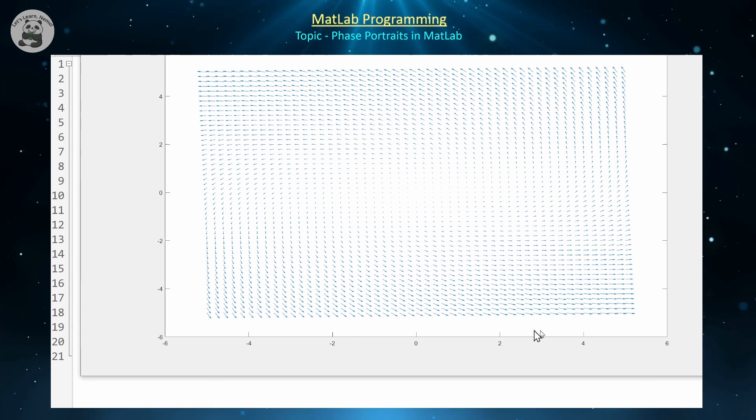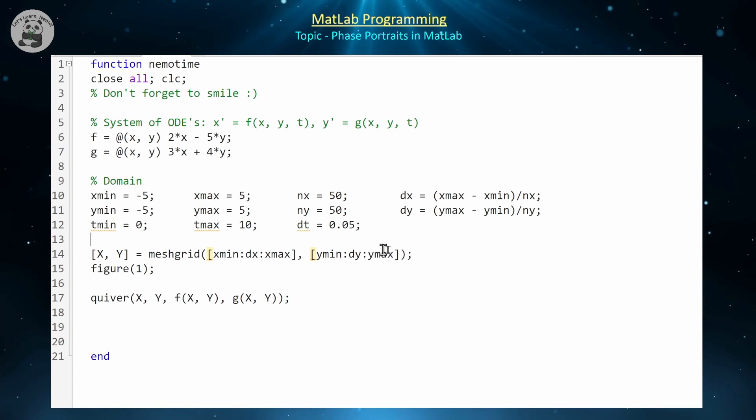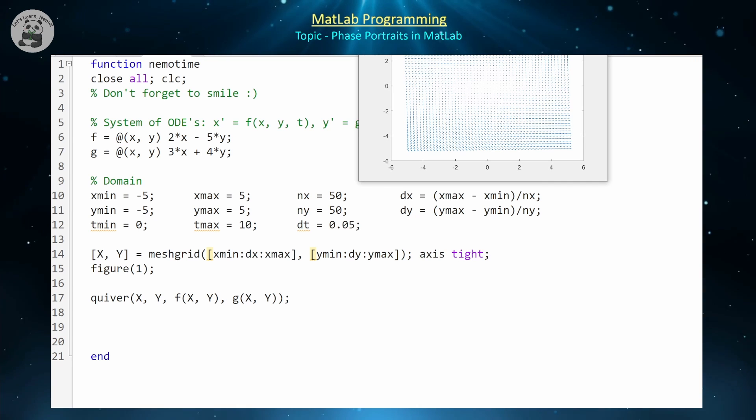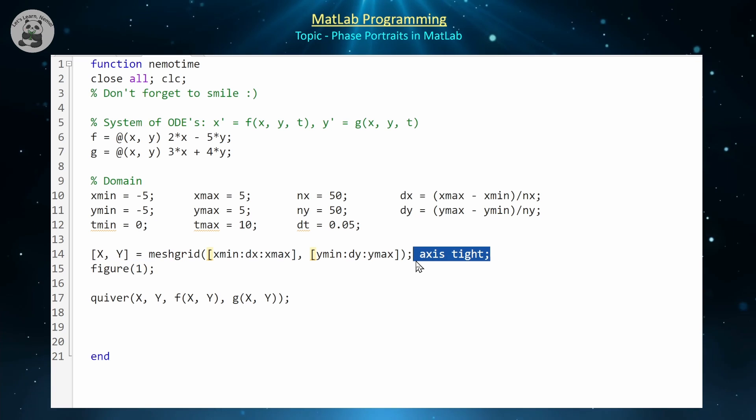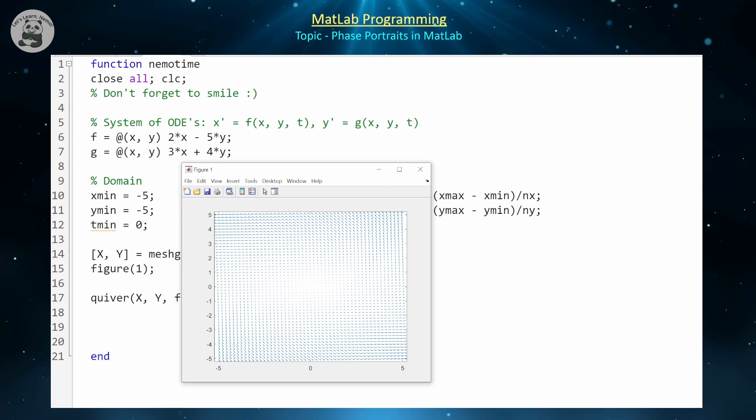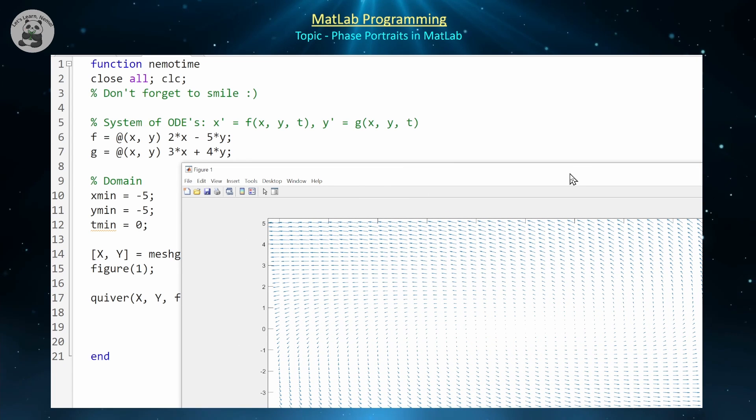Let's make this phase portrait a little bit nicer. The first thing that we can easily fix is this open white space on the outside. In order to fix this in the easiest way, we can do an axis tight function, and that will wrap our figure around whatever is being plotted.